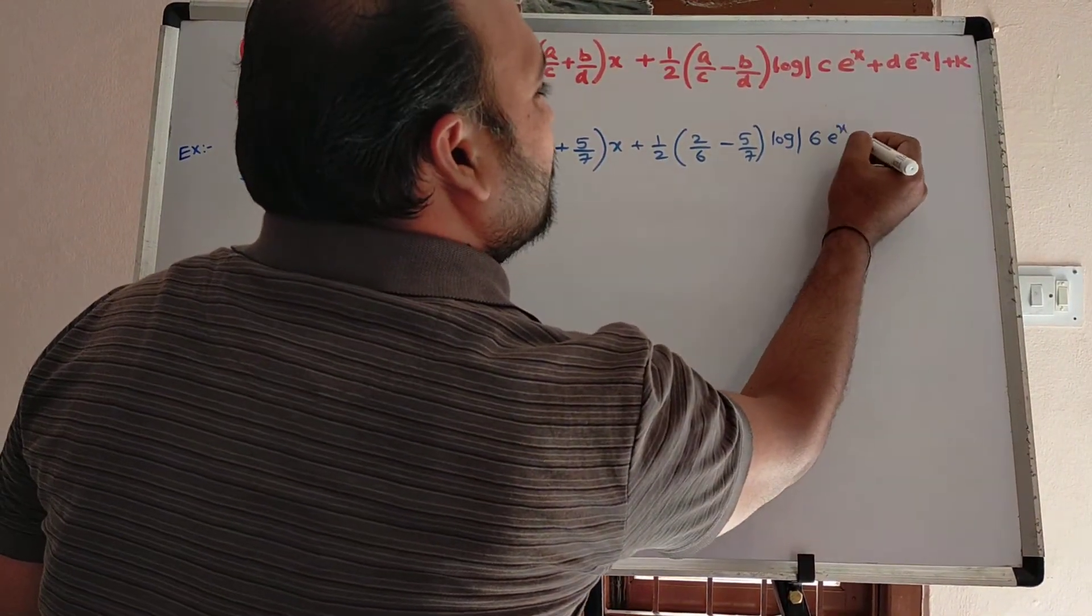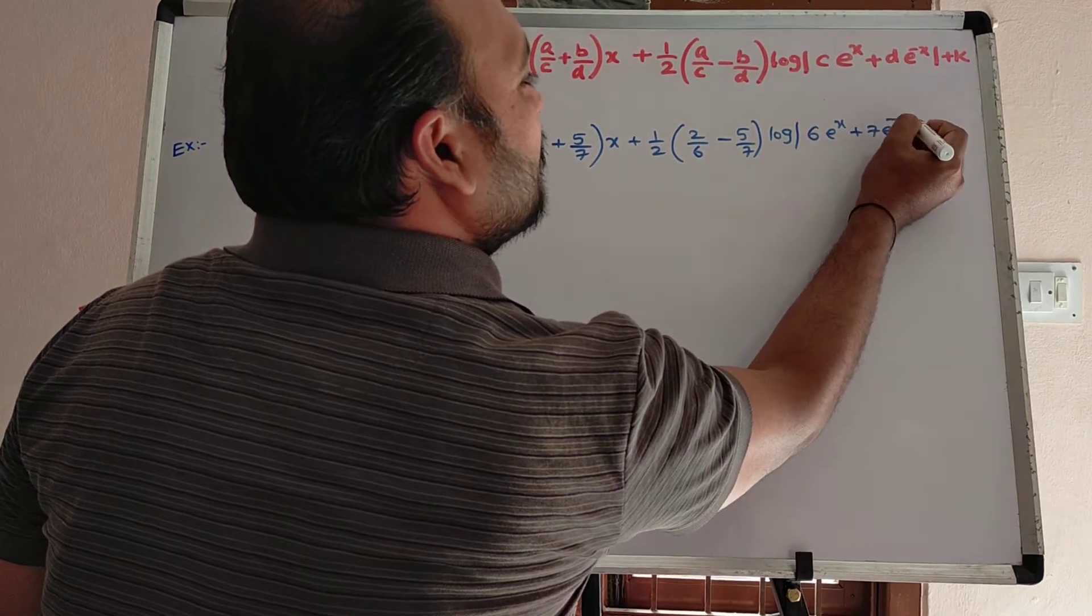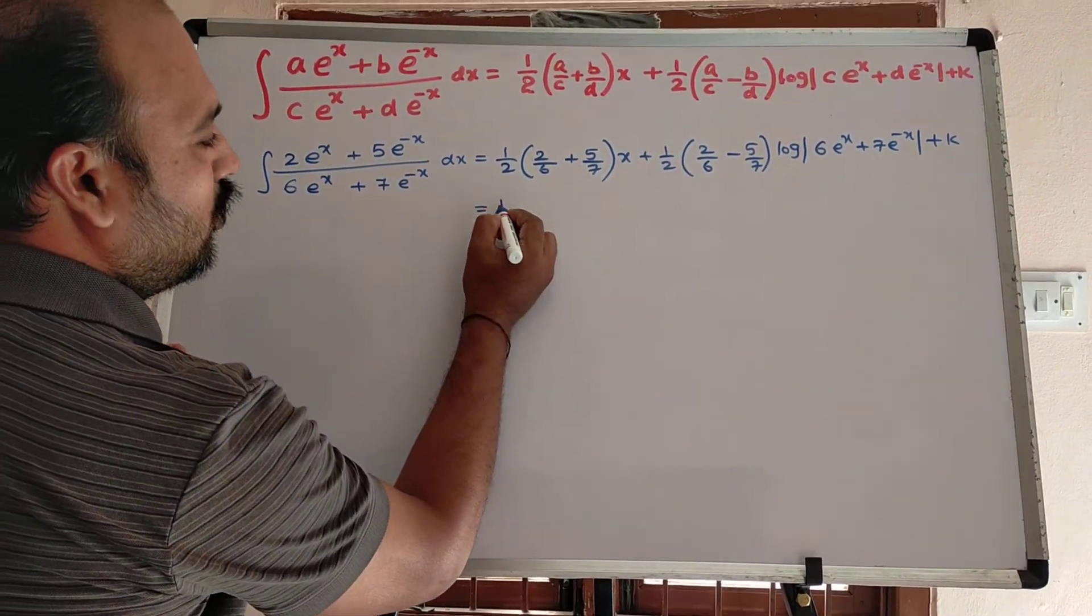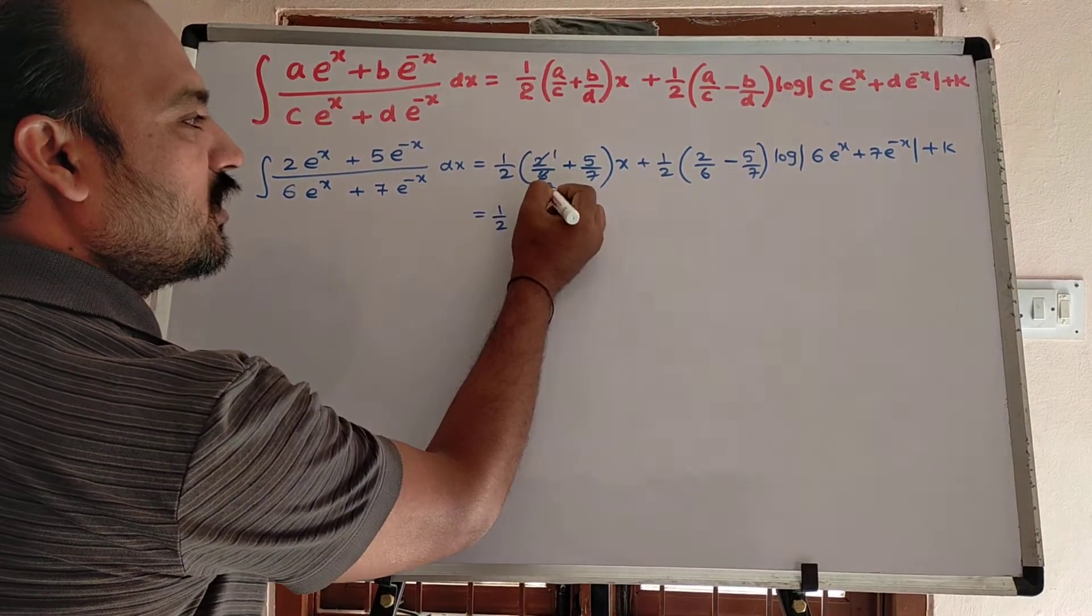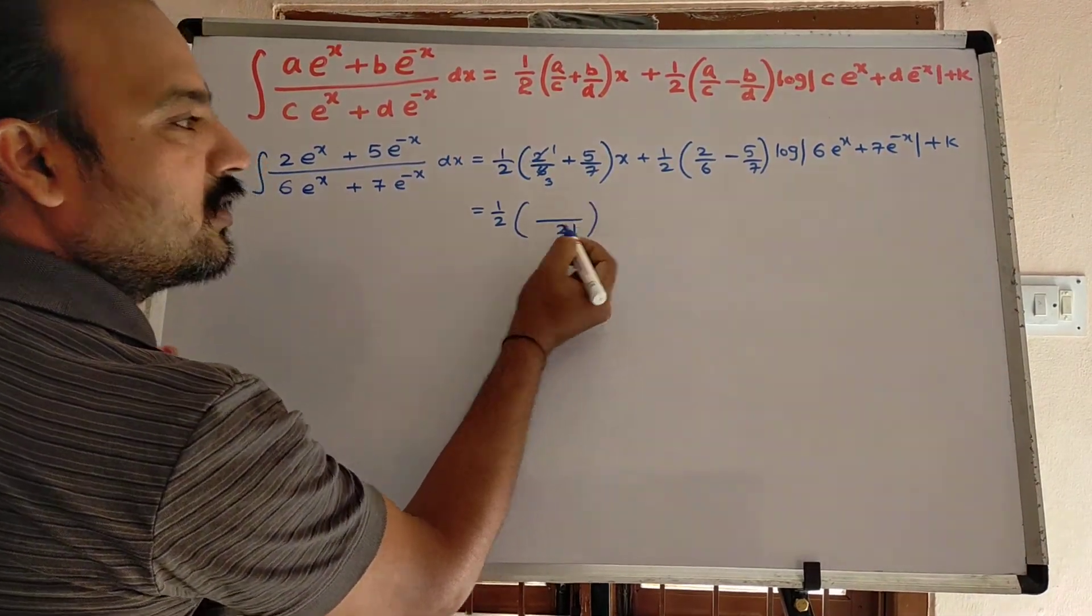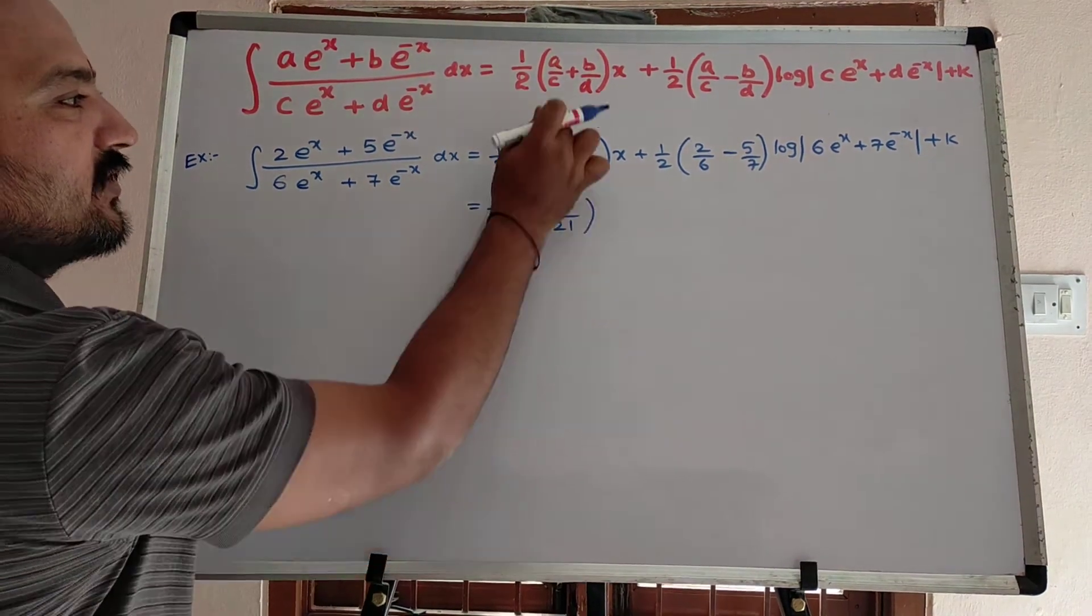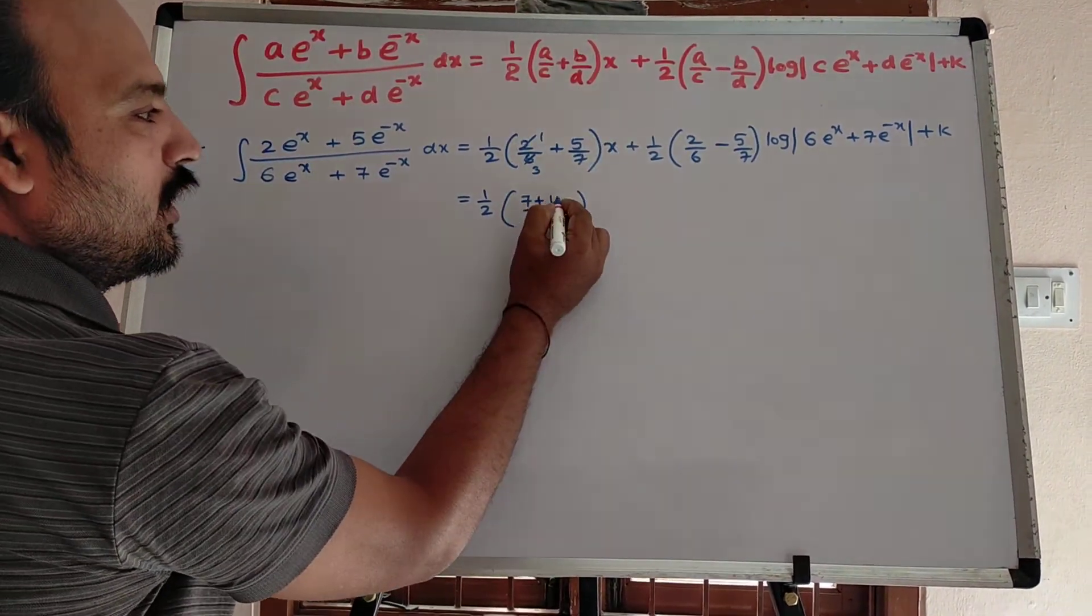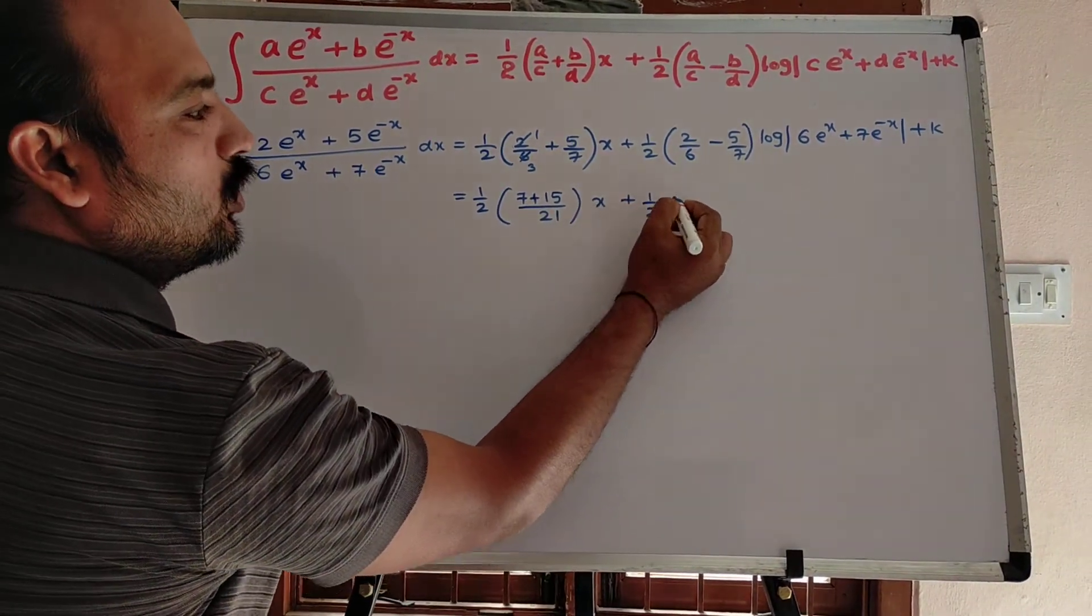Which is equal to 1 by 2, here 2 ones are, 2 threes are, take LCM 21, 3 sevens are 7 into 1 plus 7 threes are 3 into 5, 15 into x.